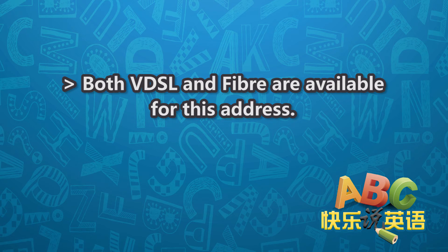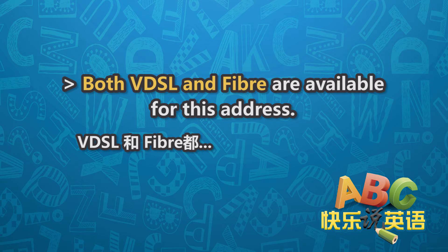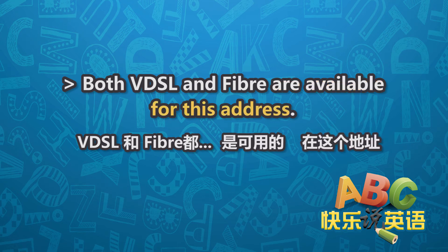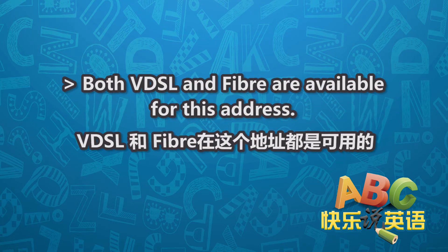那么查过你的地址之后，店员告诉你：Both VDSL and Fiber are available for this address. 也就是VDSL和Fiber在这个地址都是可用的。Both VDSL and Fiber are available. Available 是可用的，for this address 在这个地址。